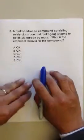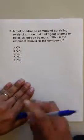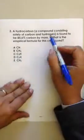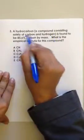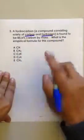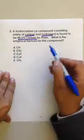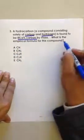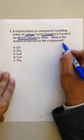All right, it's an empirical formula problem. A hydrocarbon, a compound consisting solely of carbon and hydrogen, is found to be 85.6% carbon by mass. What is the empirical formula for this compound?